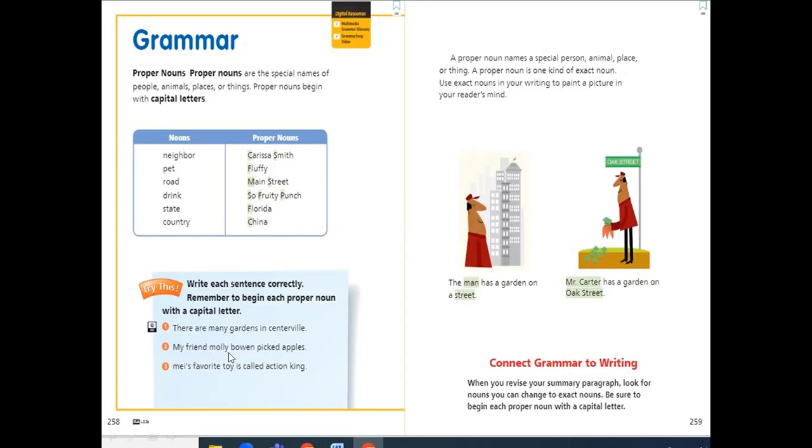And here, my friend Molly Bone picked apples. Which noun should be capitalized? Molly Bone. The M in Molly and the B in Bone.